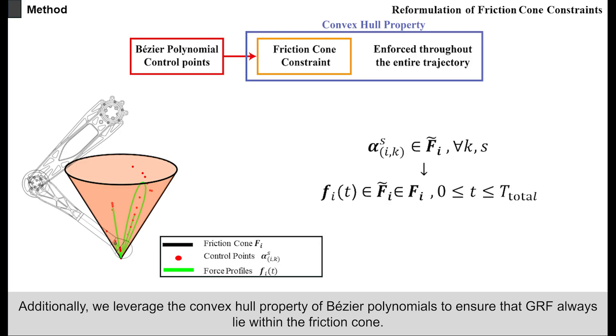Additionally, we leverage the convex hull property of Bezier polynomials to ensure that GRF always lie within the friction cone.